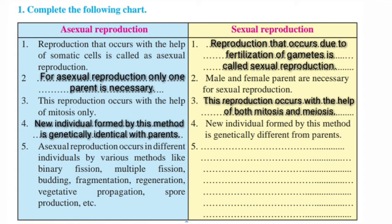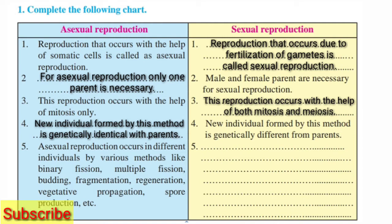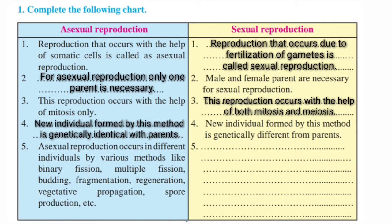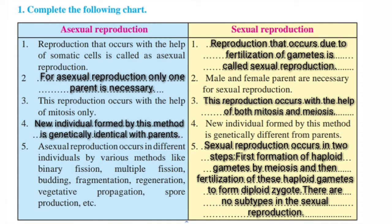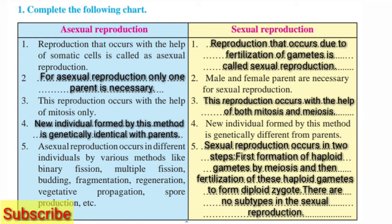New individuals formed by sexual reproduction are genetically different from parents. Asexual Reproduction occurs in different individuals by various methods like Binary Fission, Multiple Fission, Budding, Fragmentation, Regeneration, Vegetative Propagation, Spore Production, etc. Sexual Reproduction occurs in two steps: first, formation of haploid gametes by meiosis, and then fertilization of these haploid gametes to form a diploid zygote. There are no subtypes in sexual reproduction.